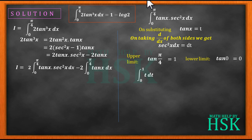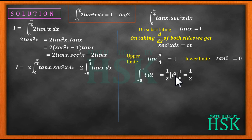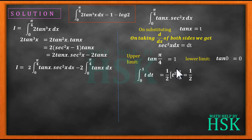So ∫tan(x)·sec²x dx from 0 to π/4 becomes ∫t dt from 0 to 1. The integration of t gives t²/2, so we write 1/2 outside and apply the limits from 0 to 1. On simplifying: 1² - 0² = 1, so the complete value equals 1/2. Therefore, this definite integral equals 1/2.